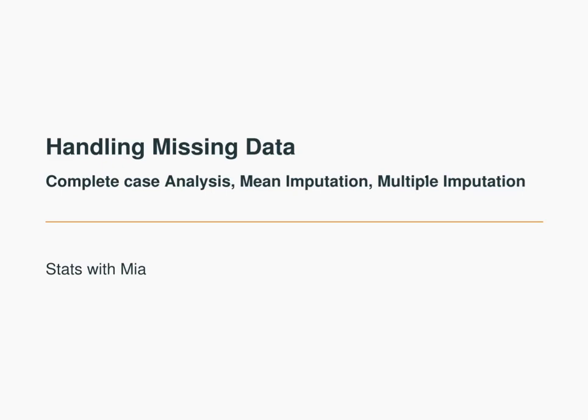Welcome to Stats with Mia. In this video, we're going to be looking at analysis approaches to data with missing values. There are lots of ways to do this, but we're going to focus on three ways: complete case analysis, mean imputation, and multiple imputation. I'll give you a brief overview of how each method works and when each method is valid.